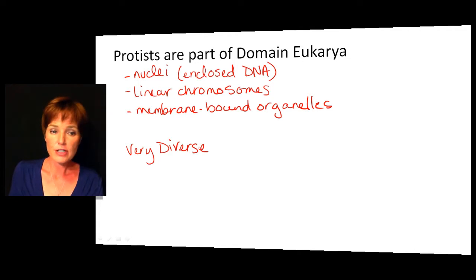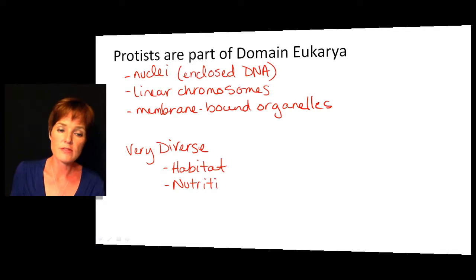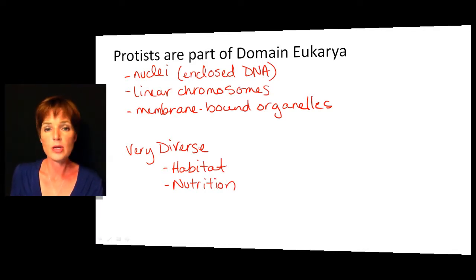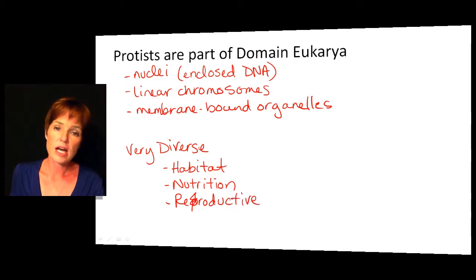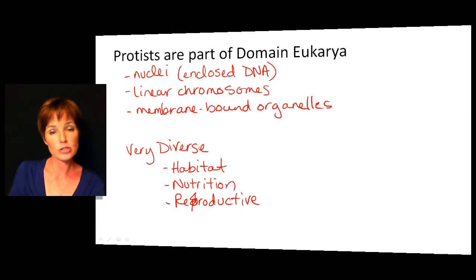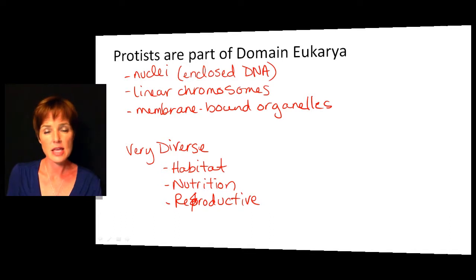Protists are very diverse in terms of habitat — we'll find marine organisms, aquatic organisms, and free-living ones. They're also diverse in their nutrition: some will be autotrophs, others will be heterotrophs, and some will be mixotrophs that have a combination of both. Their reproductive capabilities are also quite diverse — some can only reproduce asexually, others reproduce sexually, and some can do a combination. It's not really clear that they had common ancestors.